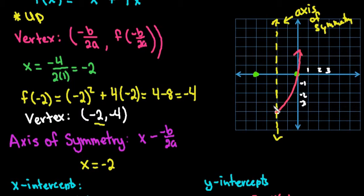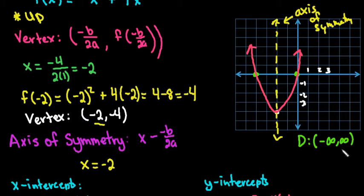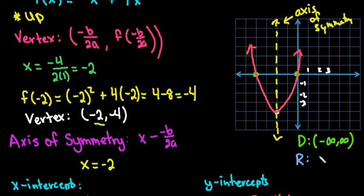Graphing this gives a U-shaped curve through those points, with the axis of symmetry through the middle. For domain and range: the domain is all x values you can plug in — for any parabola this is always negative infinity to positive infinity, since it continues forever in both directions. The range is our y values; the lowest point on this parabola is the vertex at y equals negative 4, so the range goes from negative 4 to positive infinity.